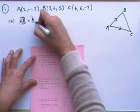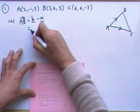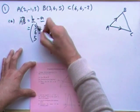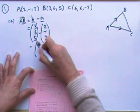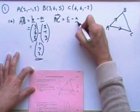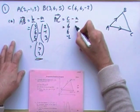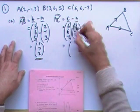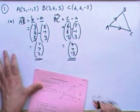AB will simply be B minus A. So I've put down the components. 3, 6, 5, take away 2, negative 1, 3. So that's going to give you 1, 7, 2. AC, that'll be C minus A. So that'll be 6, 6, negative 2, take away 2, negative 1, 3. Which is going to give me 4, 7, negative 5. So that was the first part.